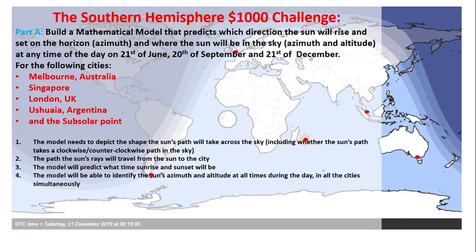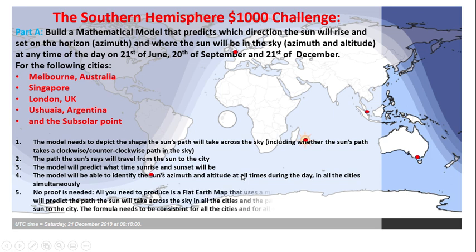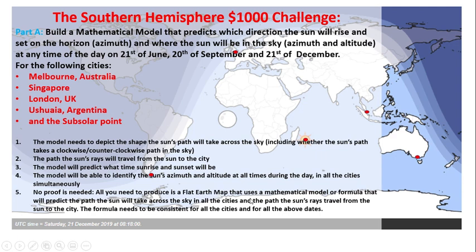That means you need to show exactly where in the sky the Sun will be at any time of these days — the 21st of June, 20th of September, and 21st of December — in all these cities, at all times during the day. You don't need to bring any proof. All you need to do is produce a flat Earth map using a mathematical model or formula that predicts the Sun's path and ray travel for all cities and all dates. The formula needs to be consistent across all cities and dates.